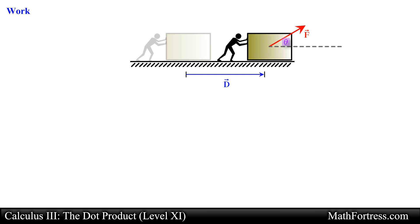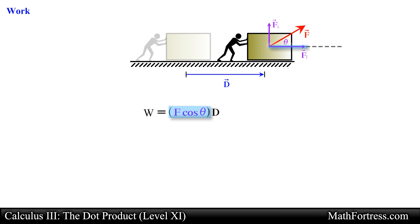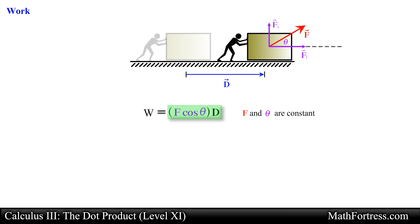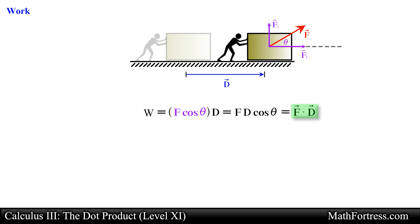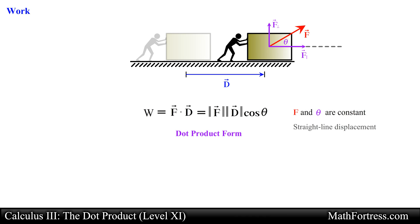In the case where a constant force acts at an angle theta to the displacement D, we must break apart the constant force into components. One component will be parallel to the direction of displacement and another component will be perpendicular to the direction of displacement. Only the parallel component of the constant force is capable of moving the object, so we calculate the work done using this parallel component and the magnitude of the displacement D. This expression is true as long as both the force and angle theta are constant during the displacement. Notice that this expression matches the form of the scalar product of two vectors, hence we can rewrite the work done using the dot product.